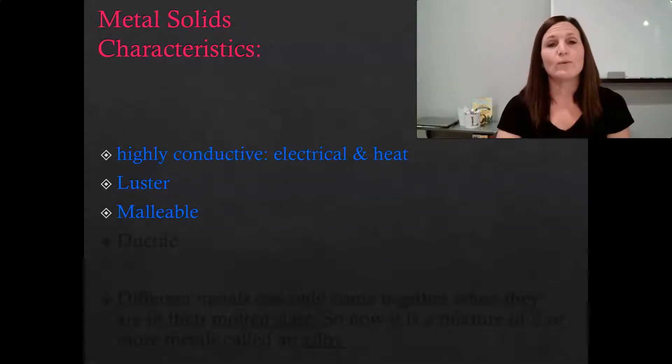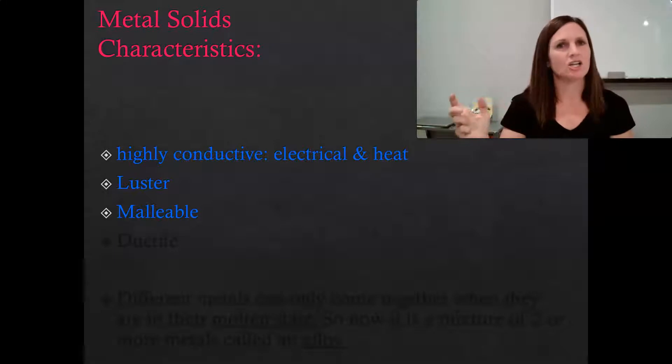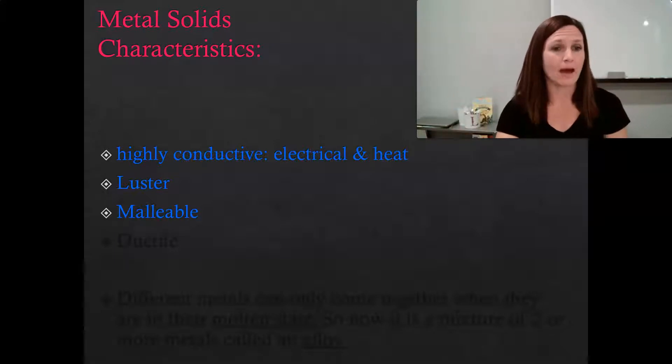They're malleable, which means that if you hit a metal, it's going to dent. So we talked about ionic compounds as being hard but brittle like glass. Metal solids are hard but malleable. When you hit them with a hammer, they would dent, not shatter. That's what it means to be malleable.